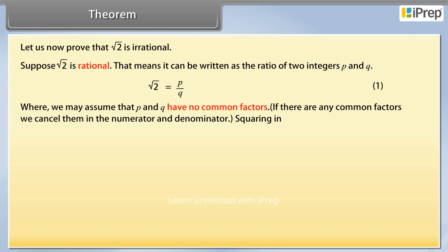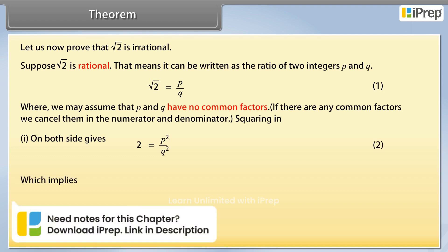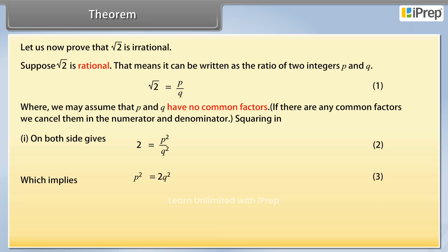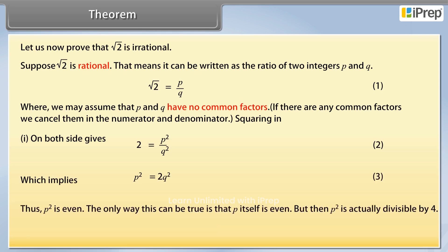If there are any common factors, we cancel them in the numerator and denominator. Squaring both sides of equation 1 gives: 2 is equal to P squared upon Q squared, which is equation 2. This implies P squared is equal to 2Q squared, which is equation 3.